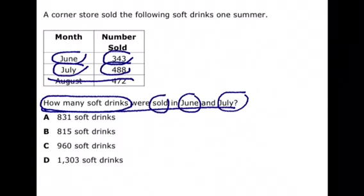We don't need August, so we want to look at these numbers right here. And if we want to know the total number, we want to know how many soft drinks were sold in both of those months. This end right here is telling us we're going to combine them, and that means we need to add.